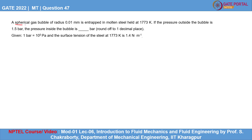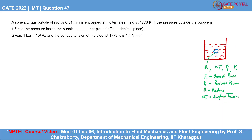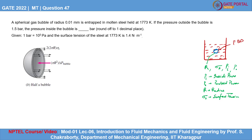In the question, there is a spherical gas bubble entrapped in molten steel. Let us assume the bubble has radius r, and the surface tension acting on this bubble is sigma_s. We are required to find the pressure inside the bubble, P_i, given the pressure outside P_o. Here r is the radius and sigma_s is the surface tension.